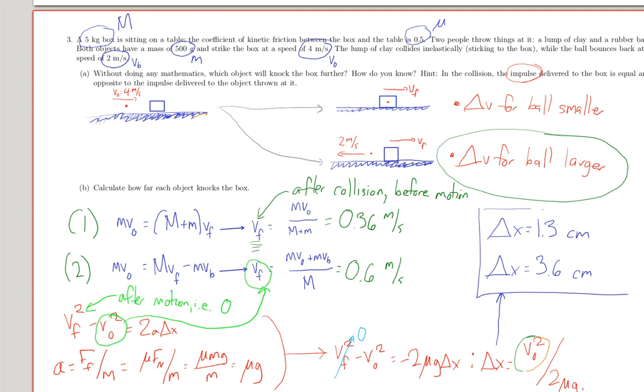So, yes indeed, the one where it bounced off knocks the box further. So, what did we learn from this problem? So, collision means use conservation of momentum. So, we use conservation of momentum here, we found the final velocities.